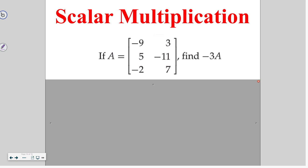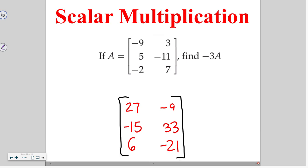Go ahead and try this one on your own. Being careful that you use that negative when you are multiplying, you should have gotten 27, -9, -15, 33, 6, -21. If you have questions about this or anything else from the lesson, please let me know when you get to class.